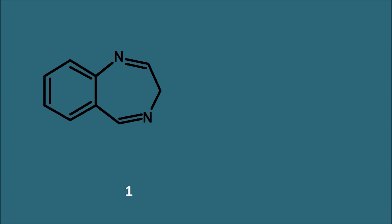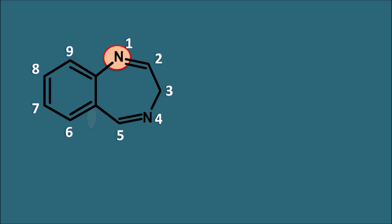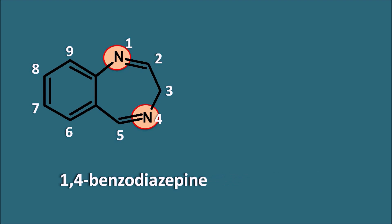We start numbering from the atoms adjacent to the bridgeheads: 1, 2, 3, 4, 5. We do not give numbers to the bridgeheads themselves, then continue: 6, 7, 8, 9. In this way we number the benzodiazepine ring system. The root name is determined by the nitrogen positions — nitrogen is present at positions 1 and 4, so the root name of the ring system is 1,4-benzodiazepine.